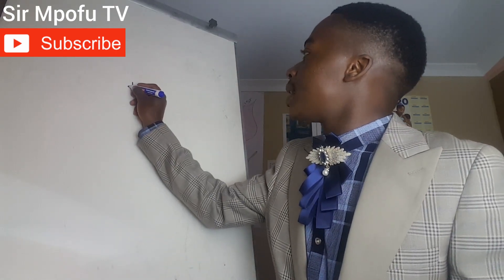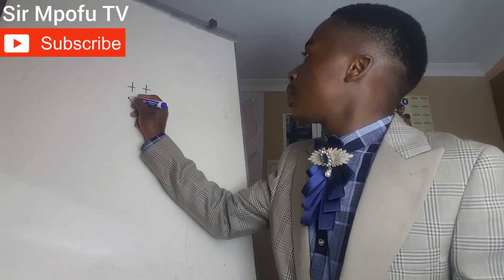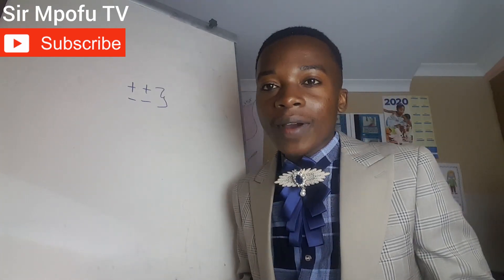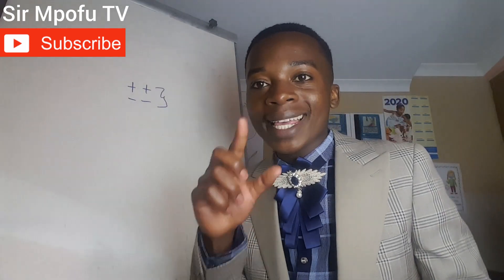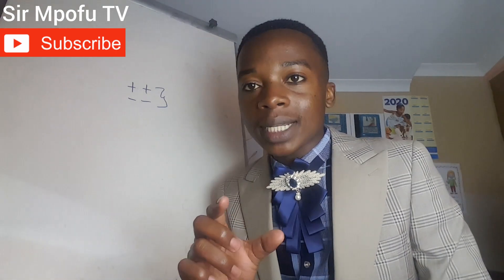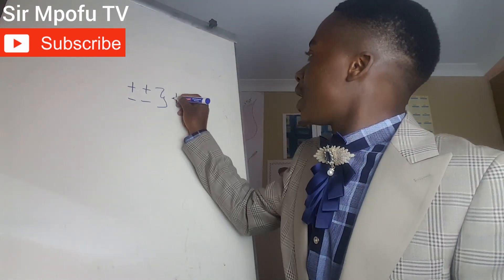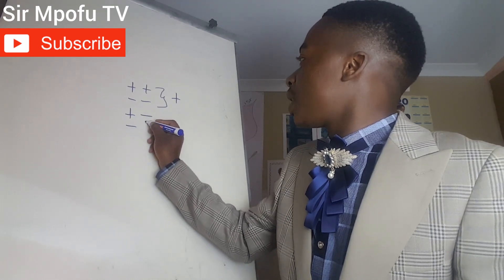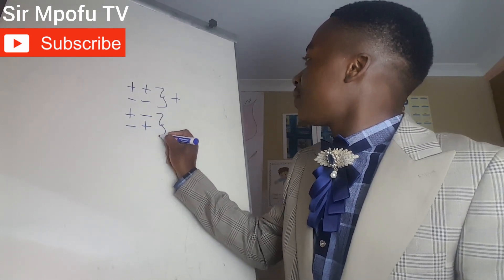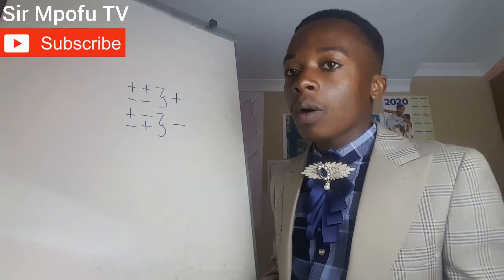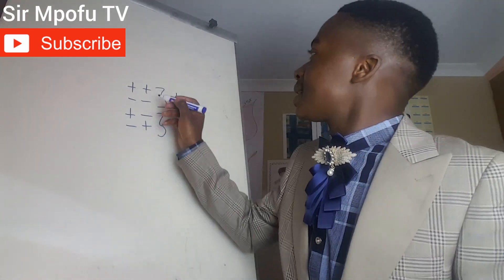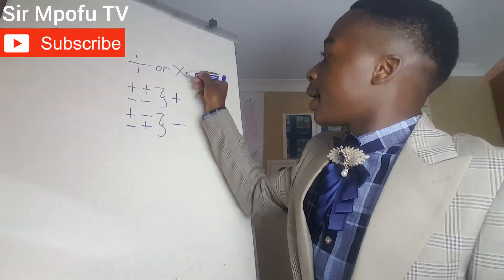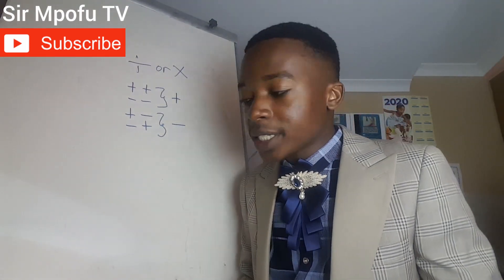Before we go into detail, take note of this: if we have the same signs — like a positive and a positive, or a negative and a negative — and you are dividing or multiplying them, they give you a positive sign. So plus and plus, or minus and minus, give you a plus. But a positive and a negative, or a negative and a positive, if you are dividing or multiplying them, give you a negative.